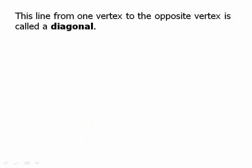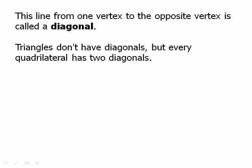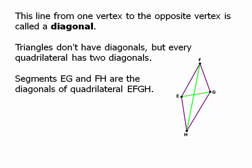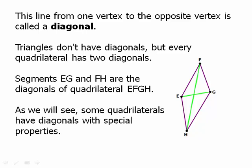The line drawn from one vertex to the opposite vertex is called a diagonal. Triangles don't have diagonals, but every quadrilateral has exactly two diagonals. Here's a quadrilateral with its two diagonals drawn — segments EG and FH are the diagonals of quadrilateral EFGH. As we will see, some quadrilaterals have diagonals with special properties.